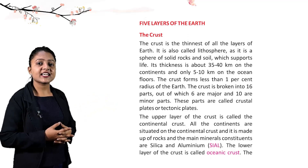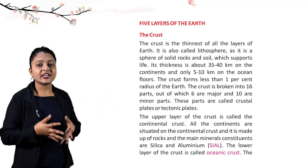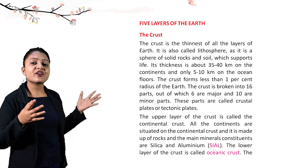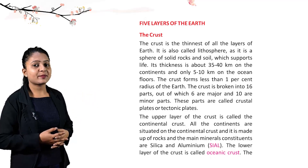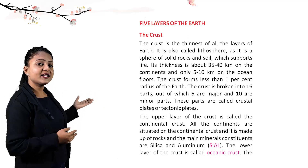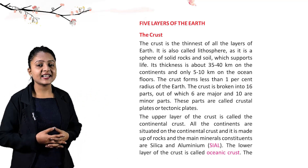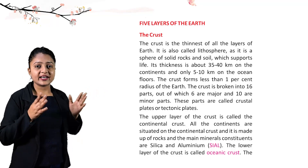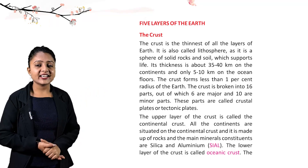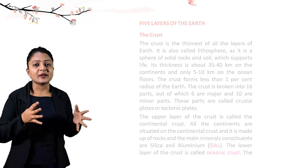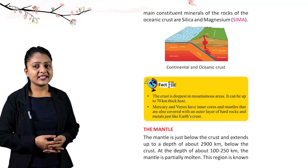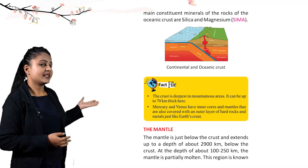The upper layer of the crust is called the continental crust. All continents are situated on it, made up of rocks whose main minerals are silica and aluminium (SIAL). The lower layer is called the oceanic crust, whose main constituent minerals are silica and magnesium (SIMA).